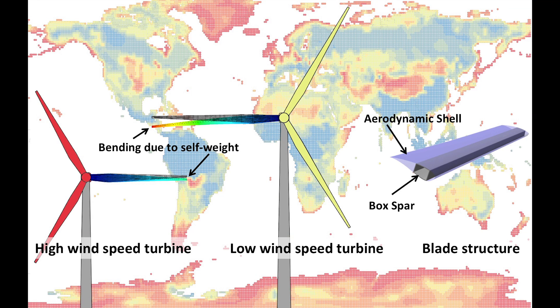Wind power is actually already the cheapest type of energy in places where wind speeds are high — that's the red areas on the map. But the good sites are filling up fast, so if we want more wind energy, we need to develop more low wind speed sites, the yellow areas.